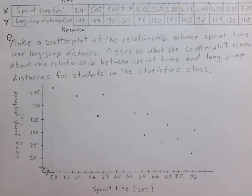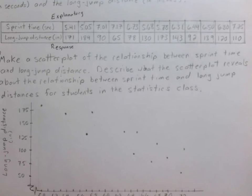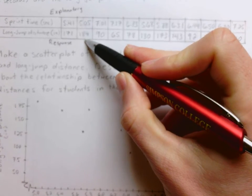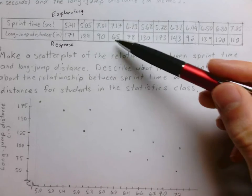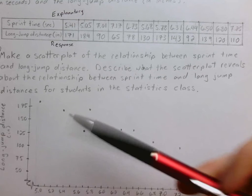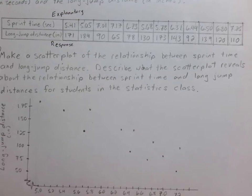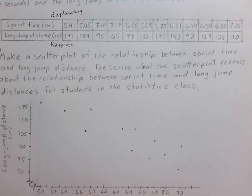Looking at our variables, our longest jump was 184 and our shortest jump was 65. So on our y-axis, we need to include numbers that correspond roughly to 65 all the way up to that 180 number. So I went from 50 all the way up to 175, and then I have that 184 just a little bit above that.